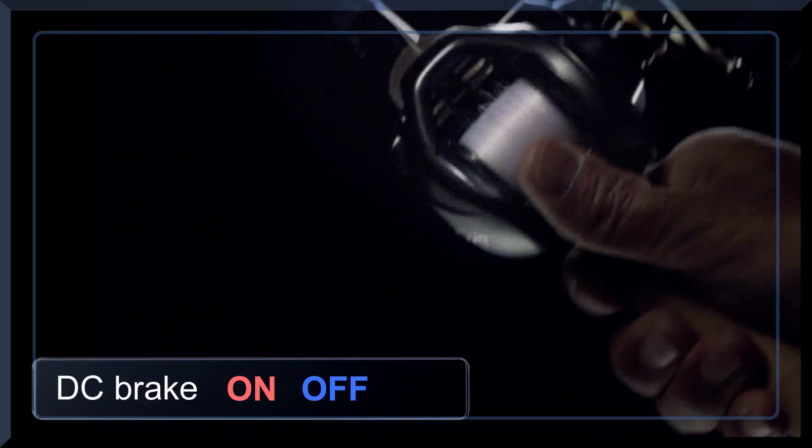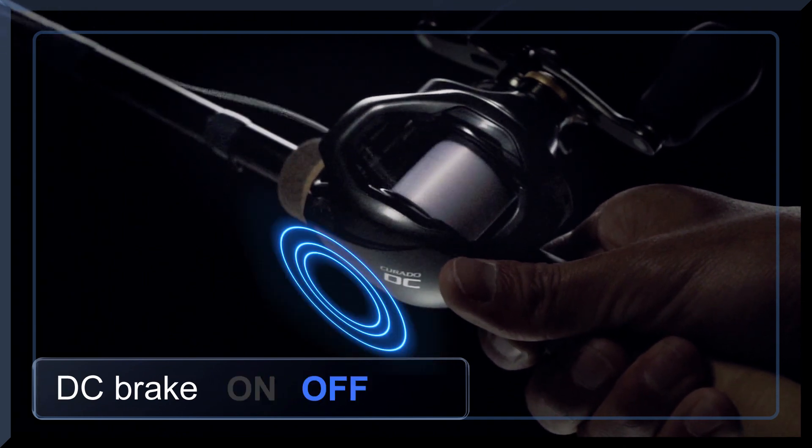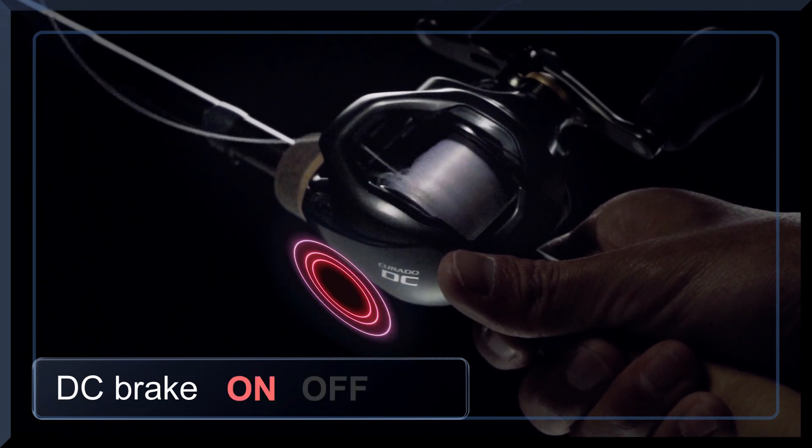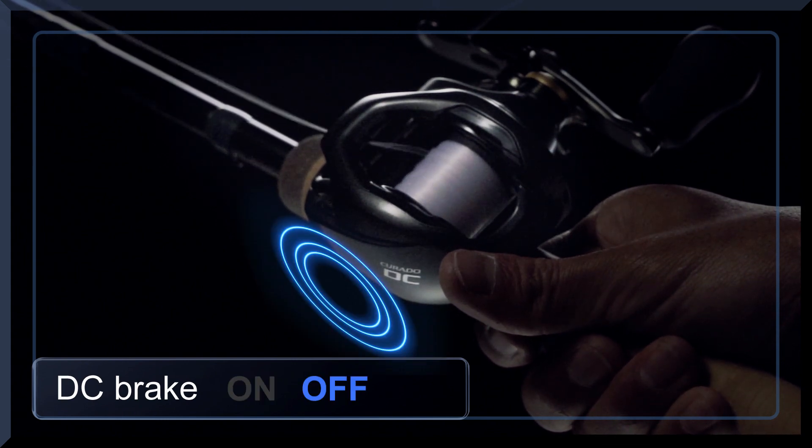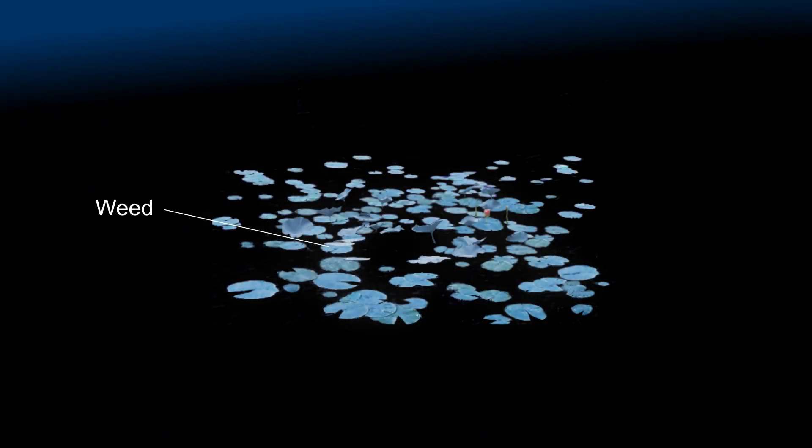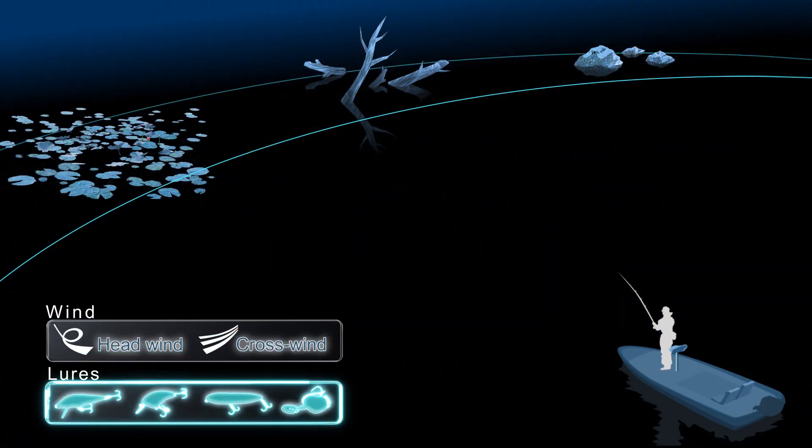This is an actual casting scene. DC Brake can provide trouble-free casting for a wide variety of lures and conditions by simply adjusting the external brake dial. No other manual adjustment is required.